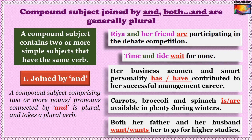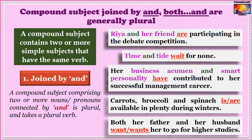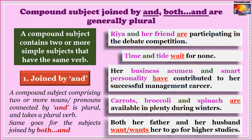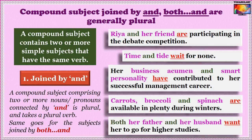Examples: 'Riya and her friend are participating in the debate competition' — compound subject is plural, so 'are.' 'Time and tide wait for none' — plural subject, plural verb 'wait.' 'Her business acumen and smart personality have contributed to her successful management career' — two noun phrases connected by AND, plural verb 'have.' 'Carrots, broccoli and spinach are available in plenty during winters.' The same rule applies for subjects joined by the correlative conjunction pair 'both…and': 'Both her father and her husband want her to go for higher studies.'